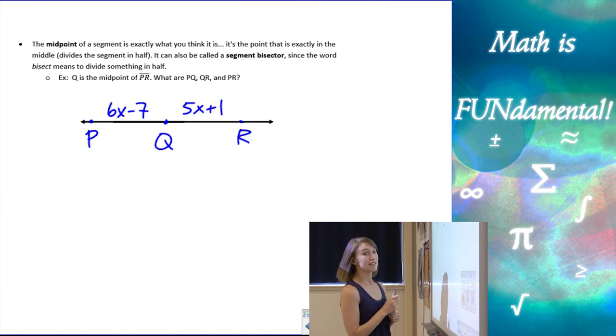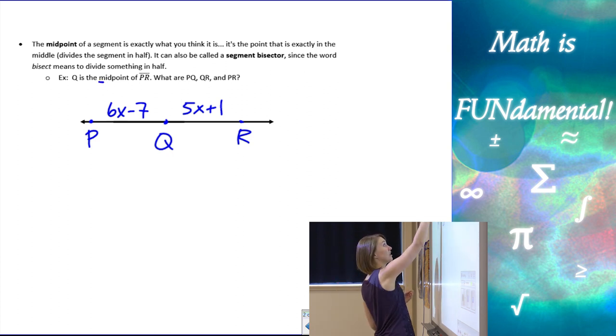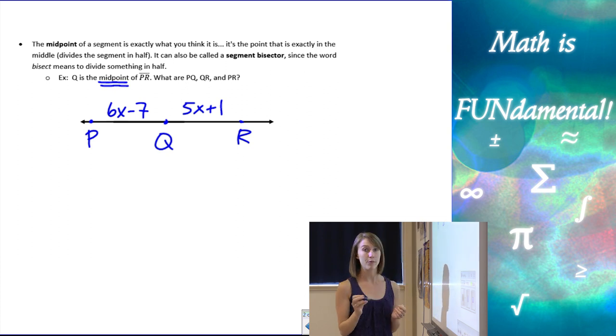Alright. Last piece of the lesson is our next and last vocab term today, which is midpoint. If you think about the word itself, mid or middle point, it means the point is exactly in the middle. It bisects that segment or it's a segment bisector. It cuts it right in half. So here, let's look at this example. We have Q as the midpoint of PR. So it's telling us that it is the midpoint. We don't have to assume that it's half because it tells us that it's half.